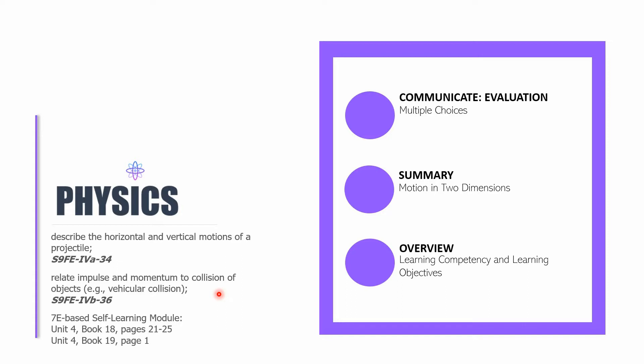And then we will be moving to the next learning competency which is relate impulse and momentum to collision of objects such as vehicular collisions. You need to have a copy of the 7E-based self-learning module in Science 9 which I have developed. And then you have to open unit 4, books 18 and 19, pages 21 to 25, and page 1 respectively.